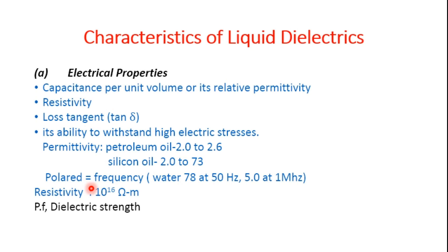The resistivity of liquid dielectric media should be more than 10 to the power of 16 ohm-meters, and most liquids in a pure state exhibit this property. The power factor of the dielectric under AC determines its performance under load conditions. It is more important in the case of cables and capacitors; however, in the case of transformers the dielectric loss is negligible compared to copper and iron losses. Pure and dry transformer oil has a very low power factor varying around 10 to the power of minus 4 at 20°C and 10 to the power of minus 3 at 90°C at 50 Hz.